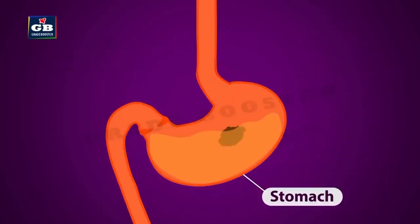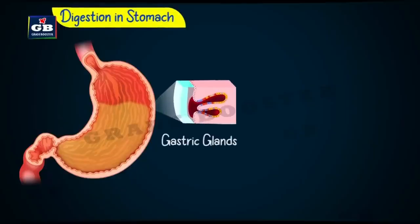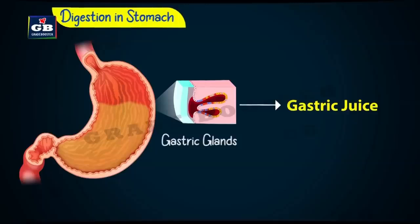The stomach is a hollow muscular organ. Gastric glands present in the walls of the stomach produce gastric juice. The gastric juice has different compounds in it that help in the process of digestion. Gastric juice has pepsin, hydrochloric acid, and mucus in it.